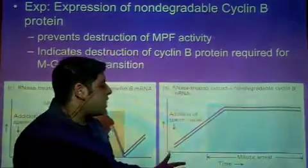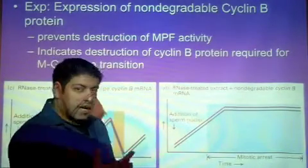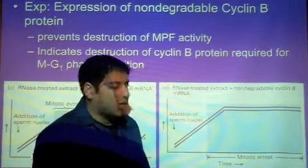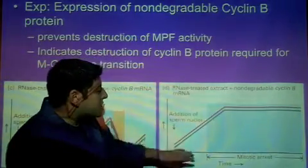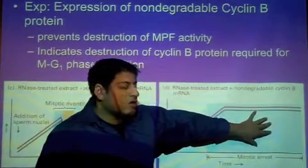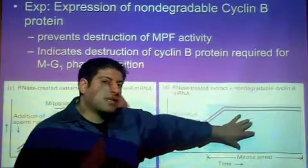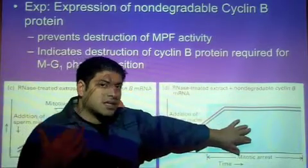Here in this graph, we've created a non-degradable form of cyclin B. As you can see, both MPF and cyclin B concentration is high and we are locked up in this metaphase state.